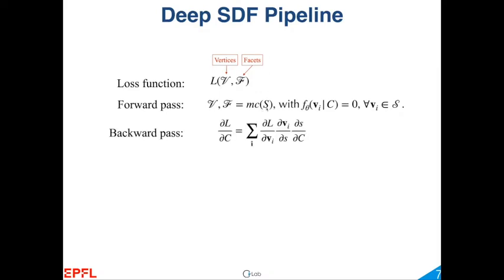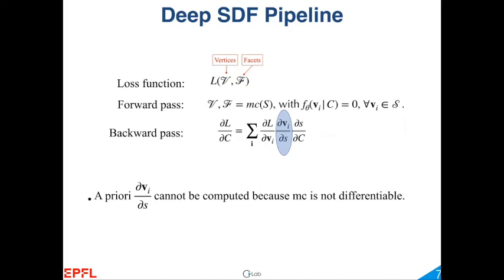When you do the forward pass, you take your implicit field S, run marching cubes on it, then compute some value at the vertices. Where it becomes tricky is the backward pass to train your network. You want to differentiate the loss with respect to code C. By the chain rule, this is: derivative of loss w.r.t. vertex position, times derivative of vertex position w.r.t. the field, times derivative of the field w.r.t. C. The first and third terms are differentiable — no problem. Where you have a problem is the middle term, because you computed V_i using marching cubes, and it is not a differentiable function of S.